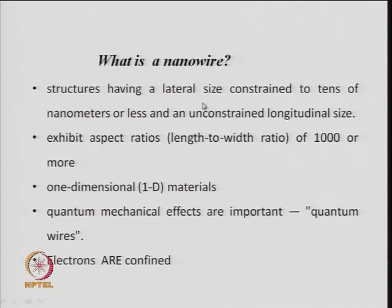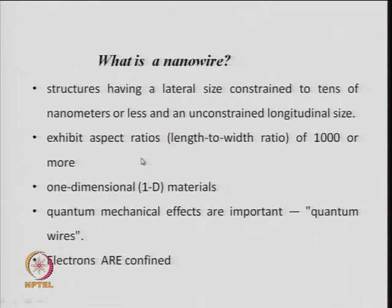Nanowires can be hollow — in which case there is only a surface — but most of the time we discuss wires which are filled, having atoms from the center of the circular cross section to the outer periphery. Such nanowires exhibit an aspect ratio, which is the ratio of length to width, of 1000 or more. For example, a wire of 1 micron (1000 nm) with a diameter of 1 nm gives an aspect ratio of 1000.